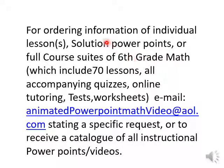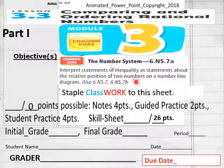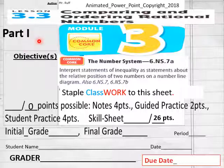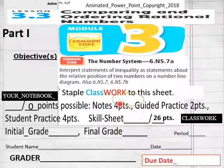Hello everybody, getting ready to do lesson 3.3 of sixth grade math today. Part one, part two, and part three are available at this email if you request those, I will get those out to you, as well as other course materials. Today's lesson is 3.3 comparing and ordering rational numbers, part one. We have a 26-point class worksheet today and no notes taken today.